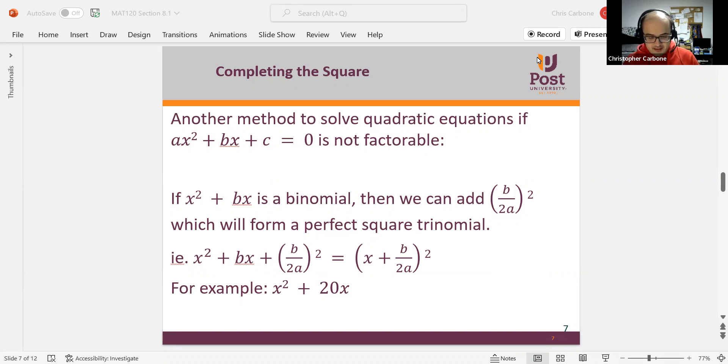So in our case here, b is 20. In this example of x squared plus 20x, we would add 20 divided by 2 squared, which basically means we'll be adding 100. So this is x squared plus 20x plus 100, and we'll factor it to x plus 10 squared.